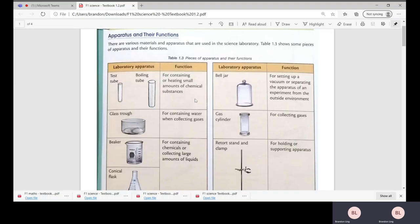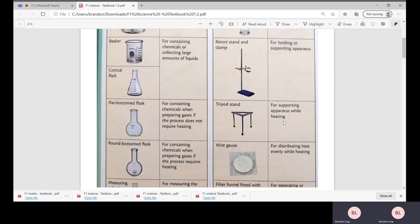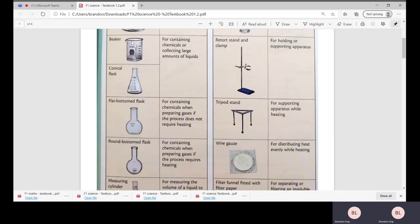Glass trough is for containing water when collecting gases. Next we have the gas cylinder for collecting different types of gases, for example carbon dioxide, oxygen gas, nitrogen gas, and so on.